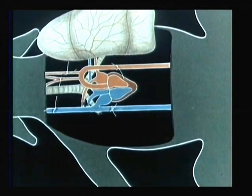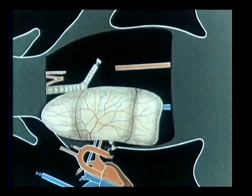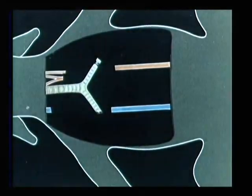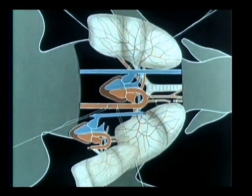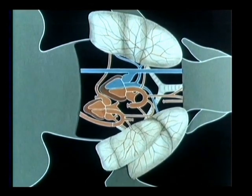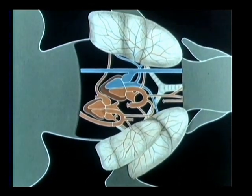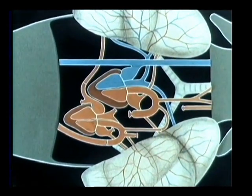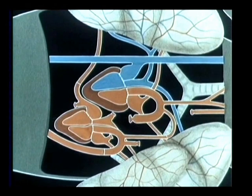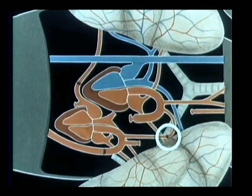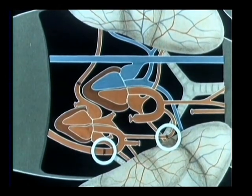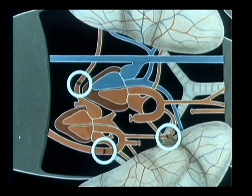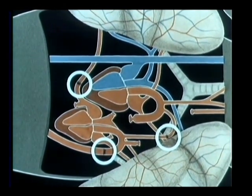The transplantation proceeded as follows: the transplant was removed from the Spenderhund. The first connection was made between the arteria subclavia and the truncus brachiocephalicus of the Spenderhund. Next was the connection between the donor aorta and the aorta of the recipient. Then the connection between the vena cava cranialis of the Spenderhund with the venae pulmonales of the right lobe of the recipient.